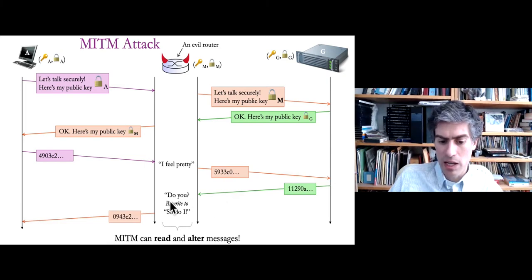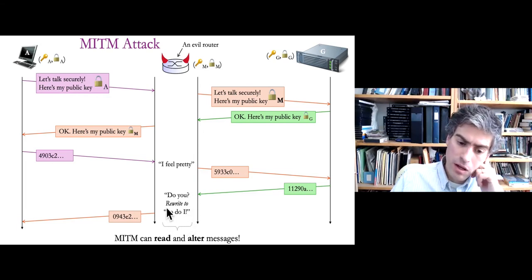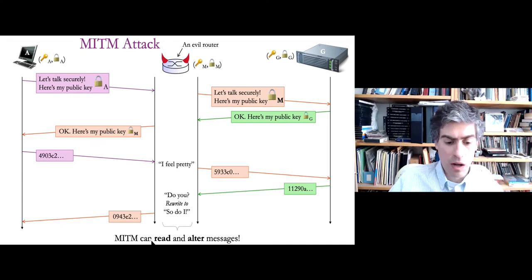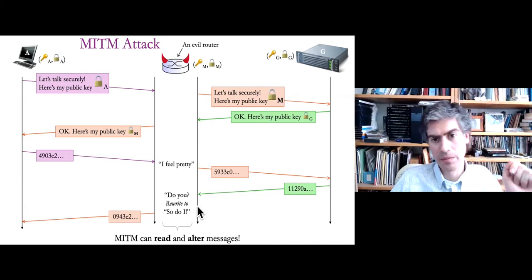G gives a response — 'Do you' — in this case. The evil router, using the same key, can reveal that response and also rewrite it. So it saw what was sent, rewrote it to a different response, re-encrypted it using the public key for A, and sent it back. Now two things have gone wrong: the man-in-the-middle has read messages sent by both sides, and it has altered one message so that A thinks G sent a different response than was originally generated. That is essentially a man-in-the-middle attack.